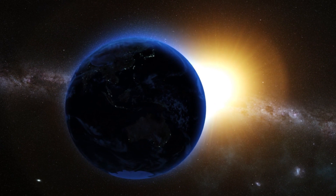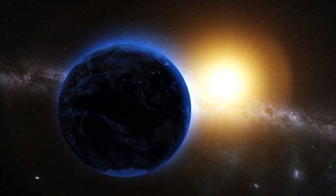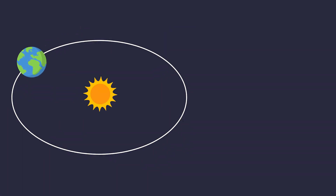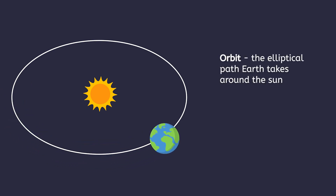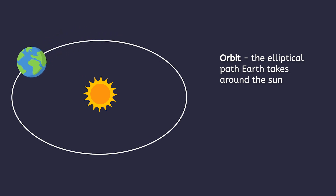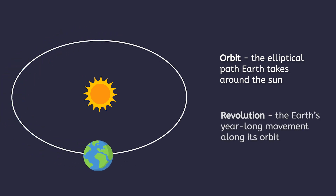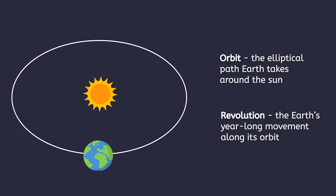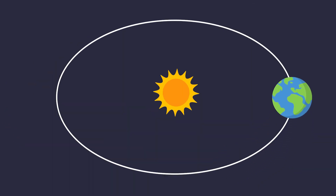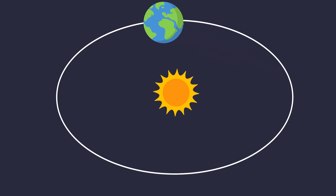The Earth is constantly moving through space. It travels on an elliptical, or oval-shaped, path that loops around the Sun, called its orbit. Each time the Earth completes a lap around this path, it's called a revolution. A year is actually a unit of time that measures how long a single revolution takes. Now, because the Earth's orbit isn't a perfect circle,